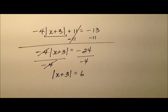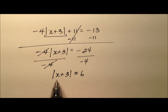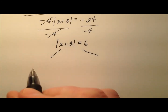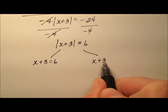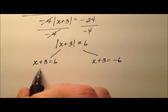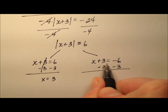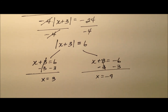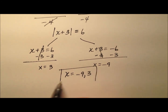Now this equation looks a lot like the first one. Since the absolute value of x plus 3 equals 6, it could have been positive 6 or negative 6. So I'll split this into two equations: x plus 3 equals positive 6, and x plus 3 equals negative 6. Subtracting 3 from both sides of each, I get x equals 3 for the left equation and x equals negative 9 for the right. So my x values are negative 9 and positive 3.